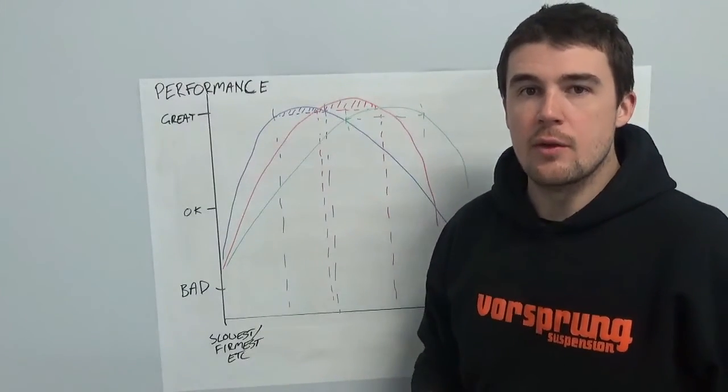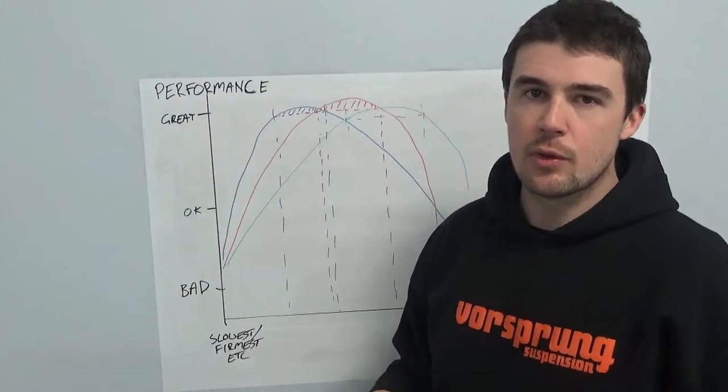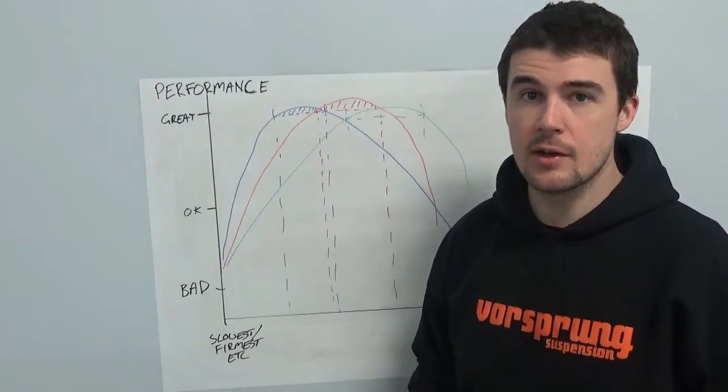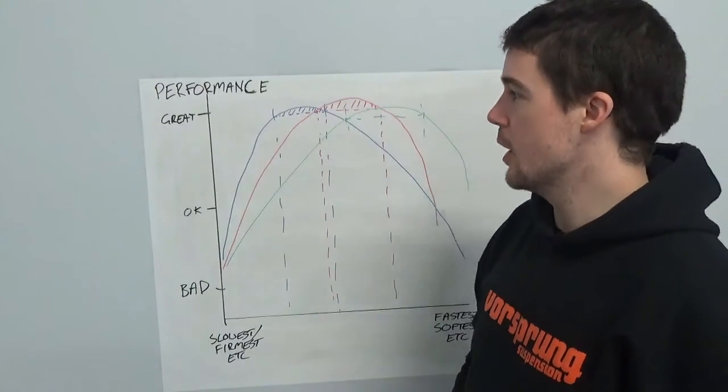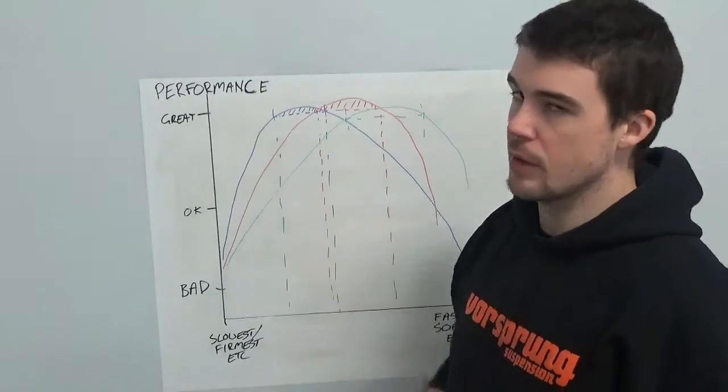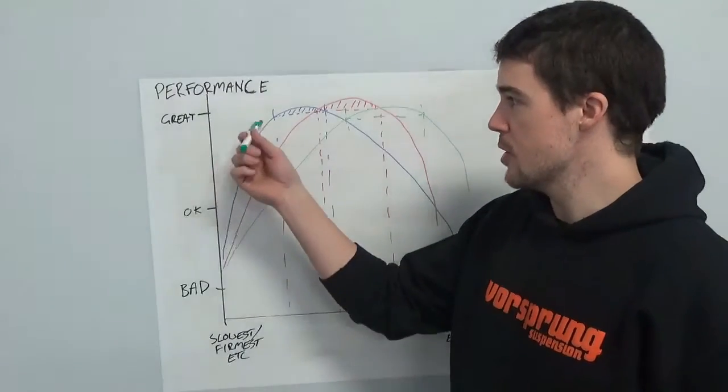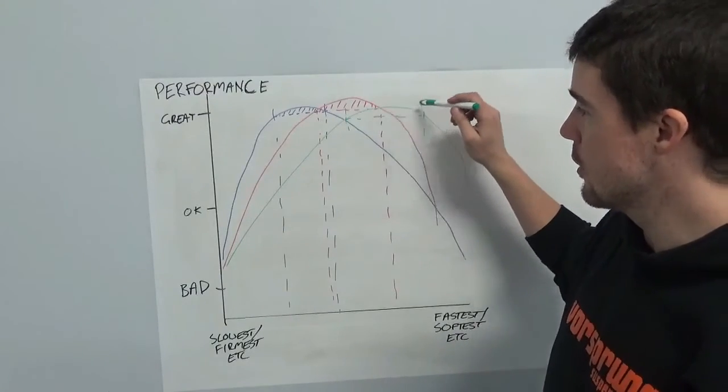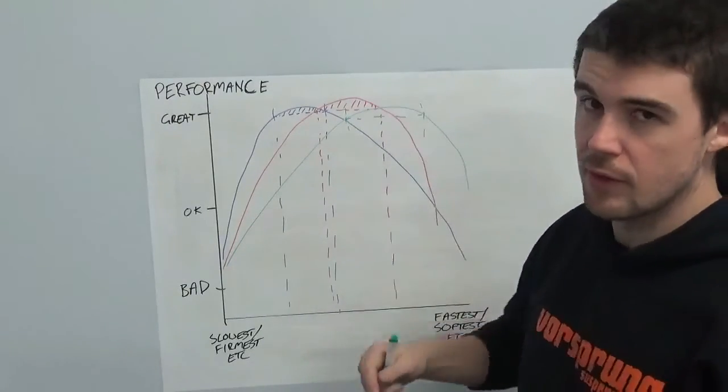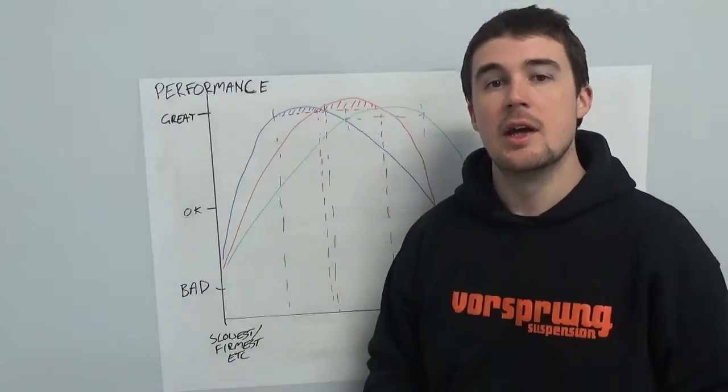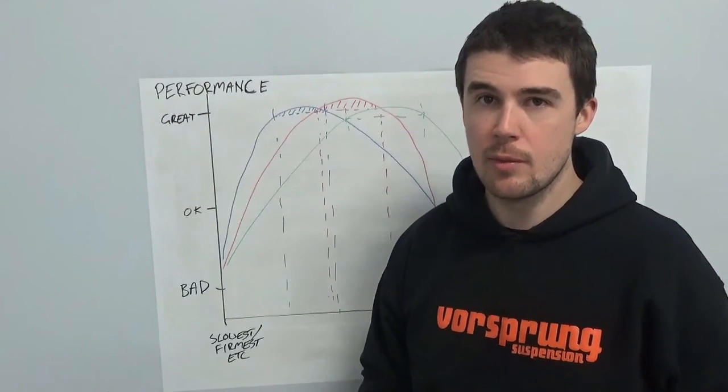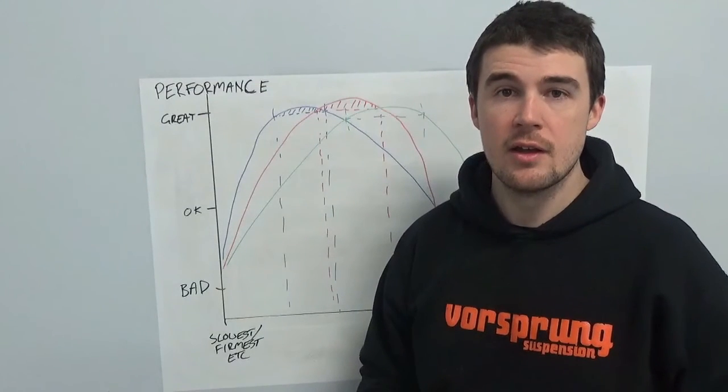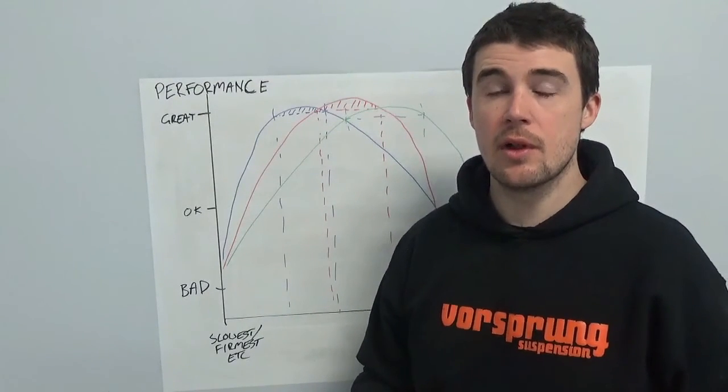For example, with spring rate, if you have a particularly linear spring rate at the shock on a particularly linear frame and you are racing downhill at World Cup level, you may find that where you get the appropriate levels of support and bottom out resistance measured by the blue curve does not line up with where you get the best traction and compliance measured by the green curve. Those might be quite a long way apart. And that is when we have to start looking at making more fundamental changes to your suspension than simply playing with that adjustment.